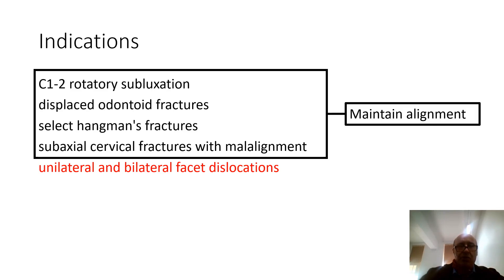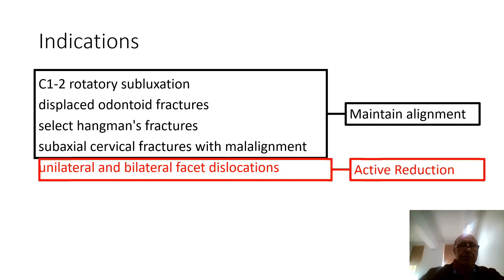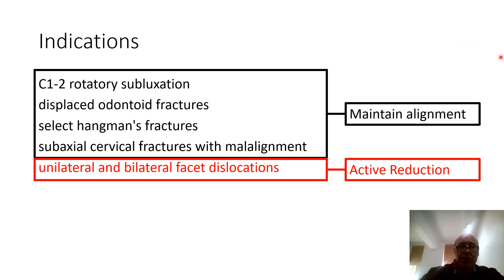Traction can serve two purposes. First, to provide alignment only — with facet dislocations, traction provides an active reduction process, which is very different. When maintaining alignment you only put in 5 kg in-line, which allows you to take off the cervical collar since it can cause pressure sores. Active reduction is a series of sequentially increasing weights with flexion. An analogy for maintaining alignment is putting a fractured femur in a Thomas splint, while the active reduction process is equivalent to reducing a dislocated hip or knee.